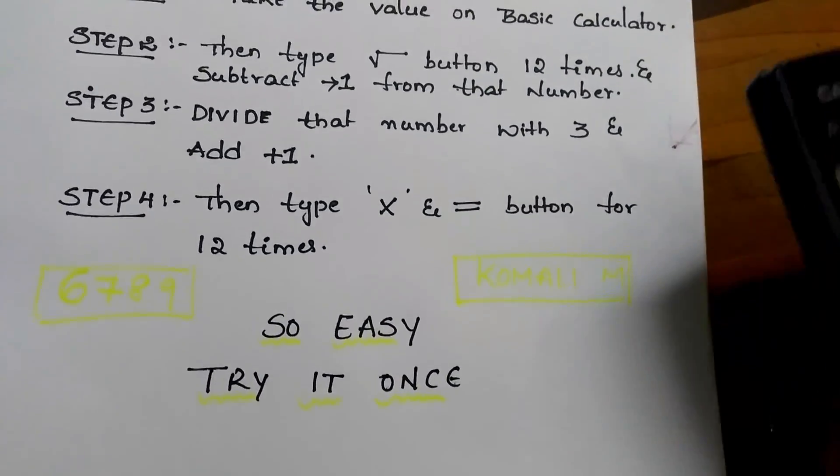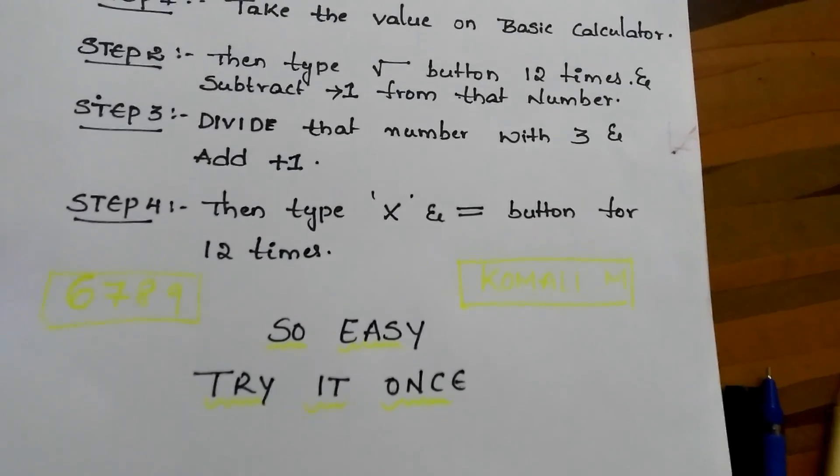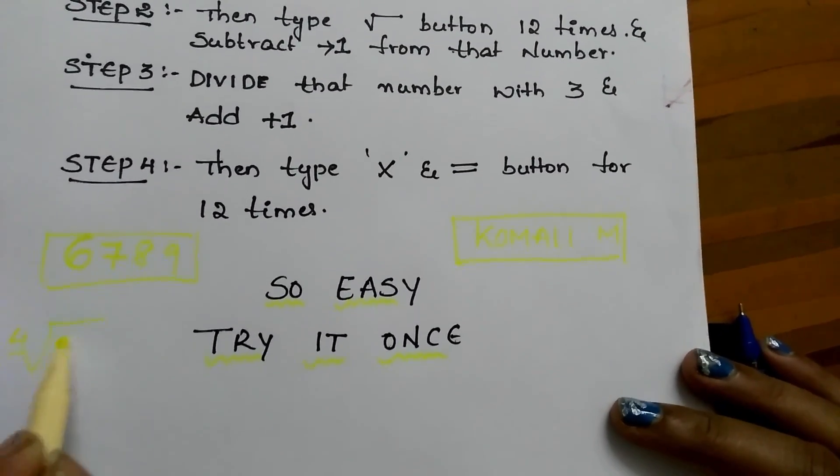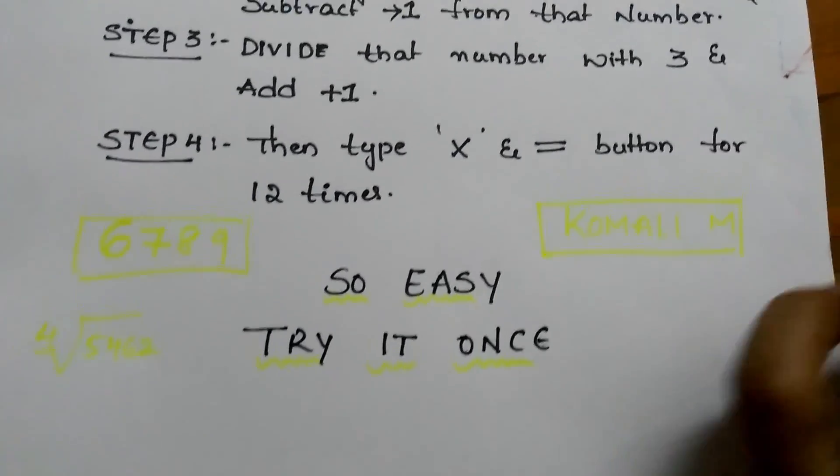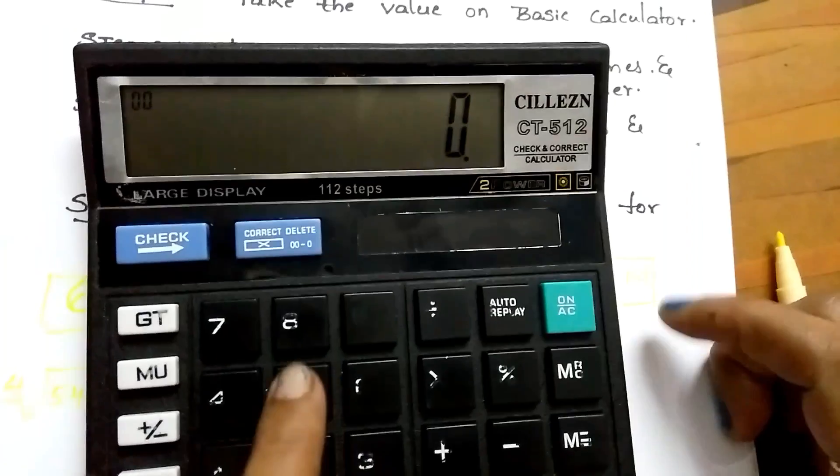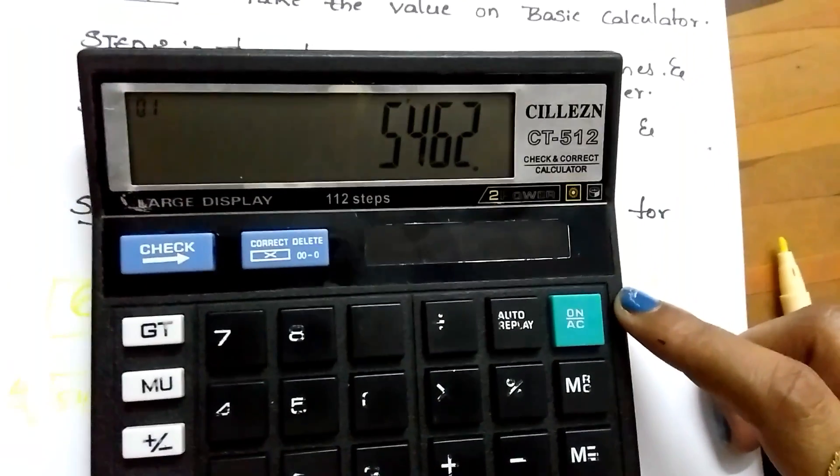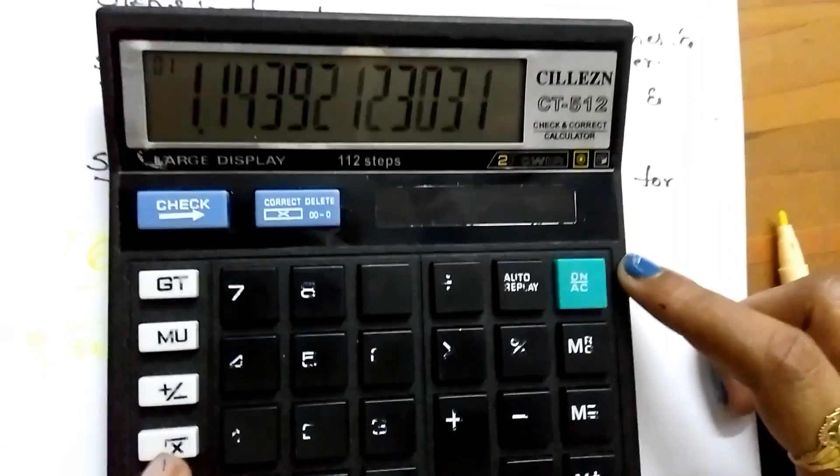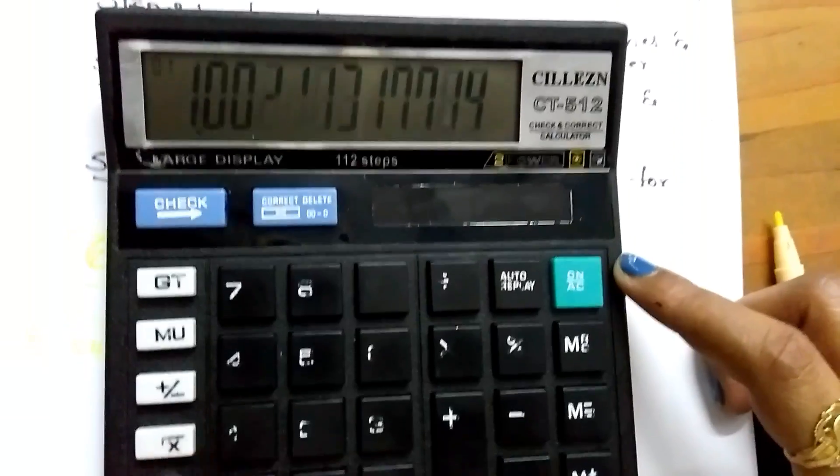We got the correct answer. You can find fourth root also. Let us see one more example. Fourth root of 5462. 5462. Square root for 12 times: 1, 2, 3, 4, 5, 6, 7, 8, 9, 10, 11, 12.